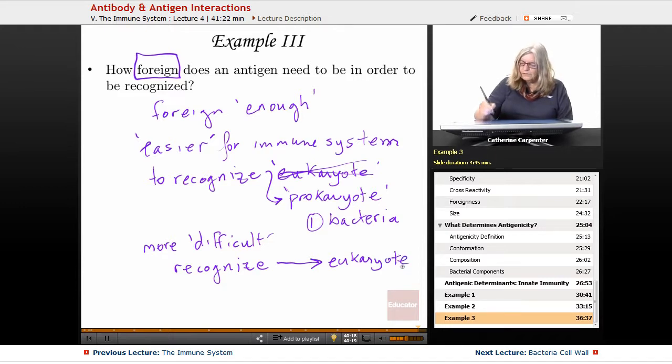What are some eukaryotes that the immune system has difficulty recognizing? Fungi, helminths, and the third kind is the protozoa.